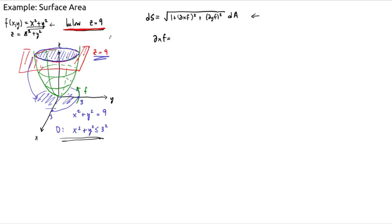So let's compute. So the X partial derivative is just 2X. This is a nice, simple-looking function. Similarly, the Y derivative is just 2Y. And when we square these and plug them into our area element, we end up with the square root of 1 plus 4X squared plus 4Y squared, all under the square root, times dA.